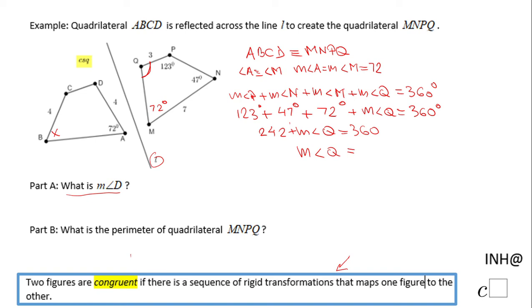I can find the measure of angle Q by subtracting 242 from 360, and I end up with 118 degrees. Now, how can I use this to find the measure of angle D? If you take a look, angle D and angle Q are corresponding angles in this congruent statement and in this reflection.